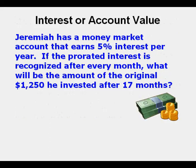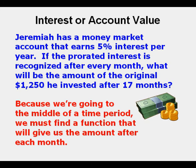Our first problem: Jeremiah has a money market account that earns 5% interest per year. If the prorated interest is recognized after every month, what will be the amount of the original $1,250 he invested after 17 months? Because we are going to the middle of a time period, we must find a function that will give us the amount after each month.